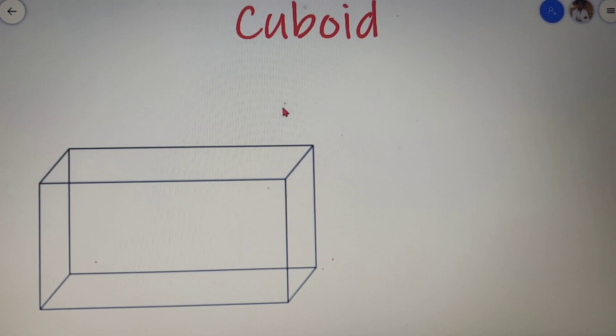Now similar to that of a cube, a cuboid has two kinds of diagonals. One is a face diagonal and another is a body diagonal. So let's discuss both the diagonals one by one.